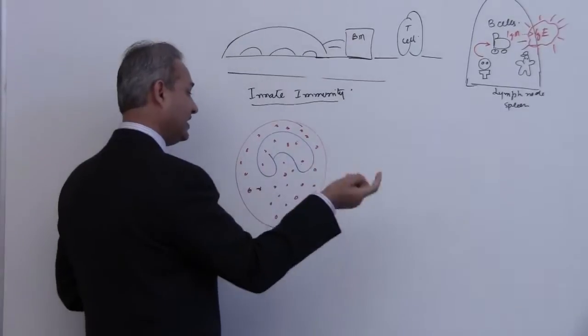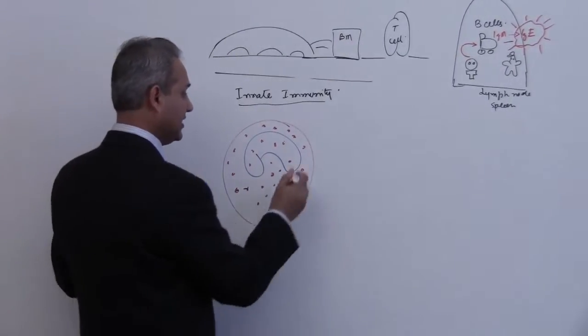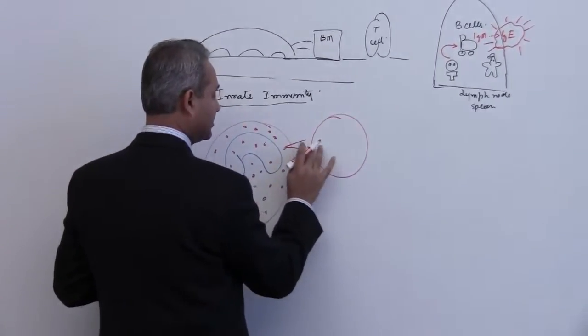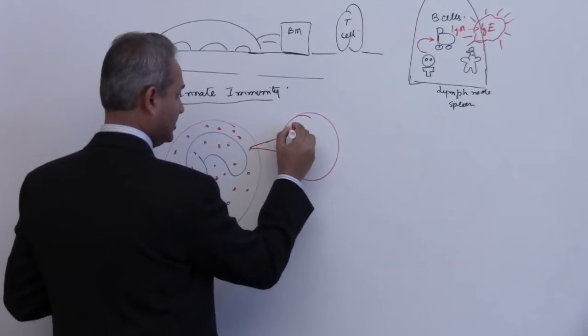So it takes up the acidic dyes because inside the granule, if I make the granule here, inside the granule there is a protein called major basic protein.